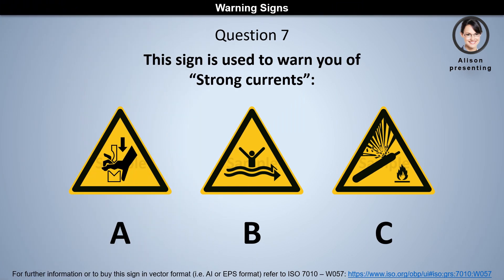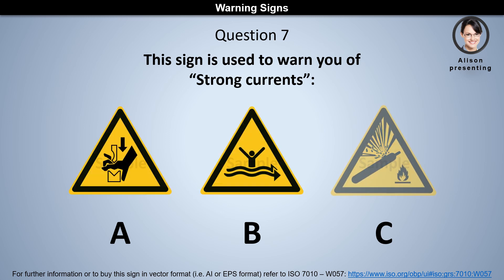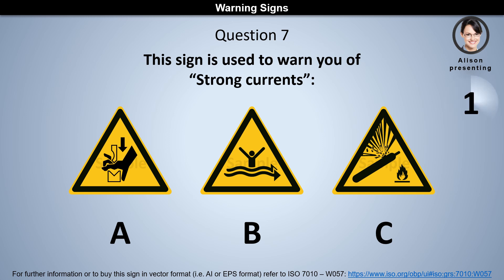Question 7. This sign is used to warn you of strong currents. Is it A, B, or C? The answer is B.